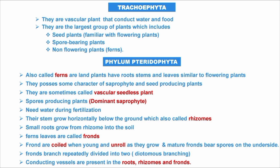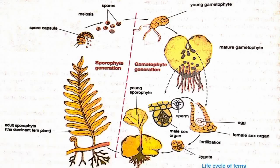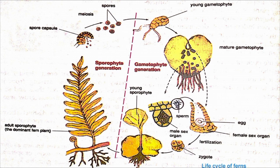Here is the typical life cycle of Pterophyta: young gametophyte matures into a gametophyte, then egg, male and female gametes meet to form a zygote after fertilization, and the zygote develops into a young fern, continuing the regeneration cycle.